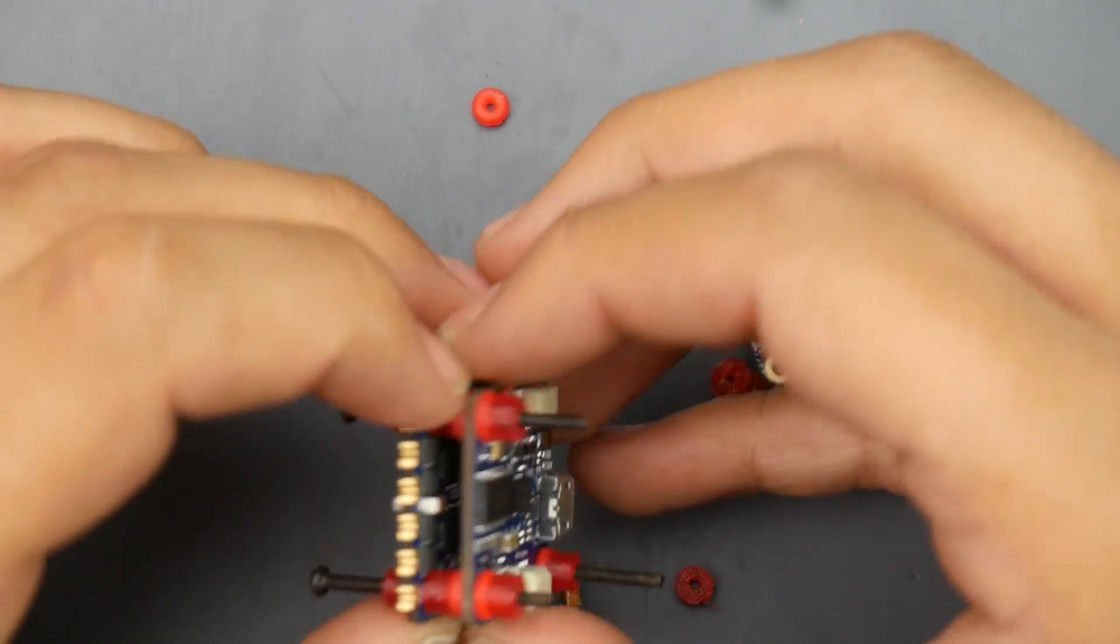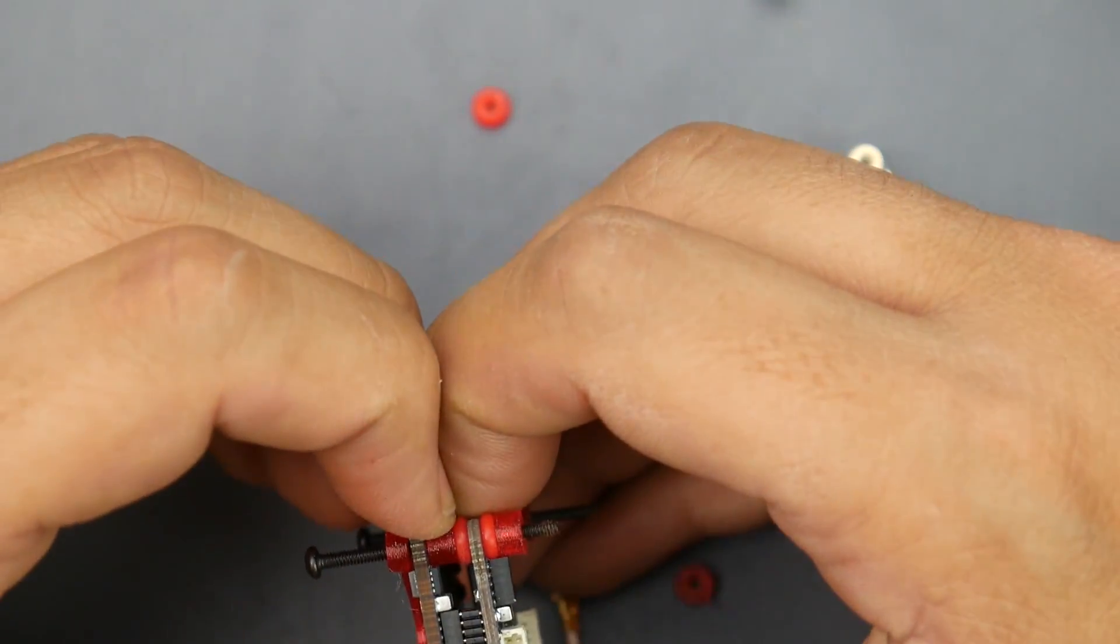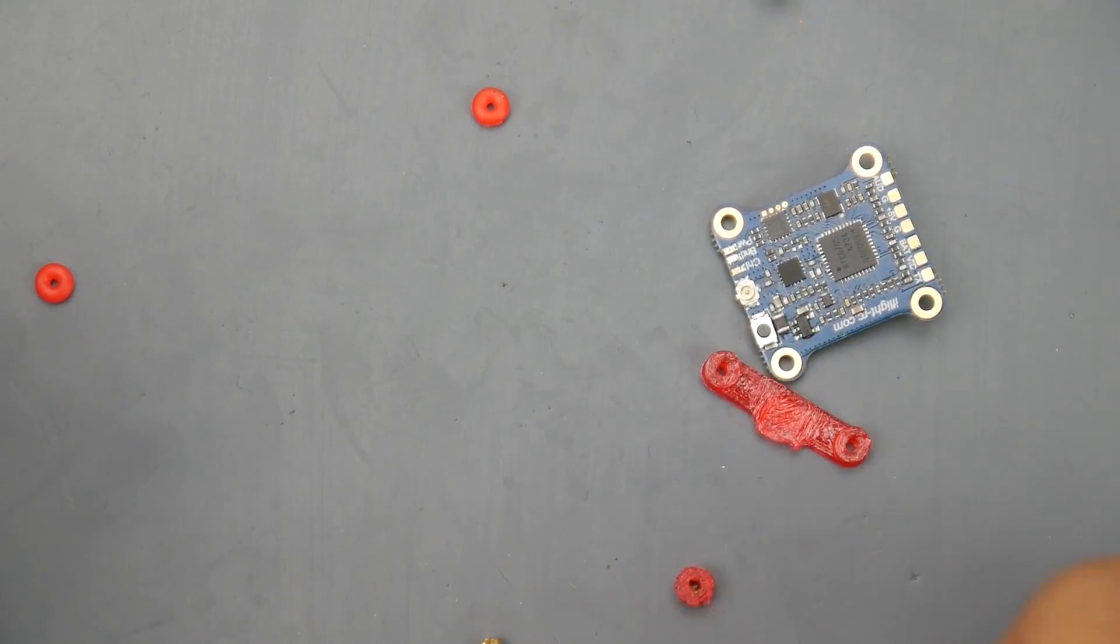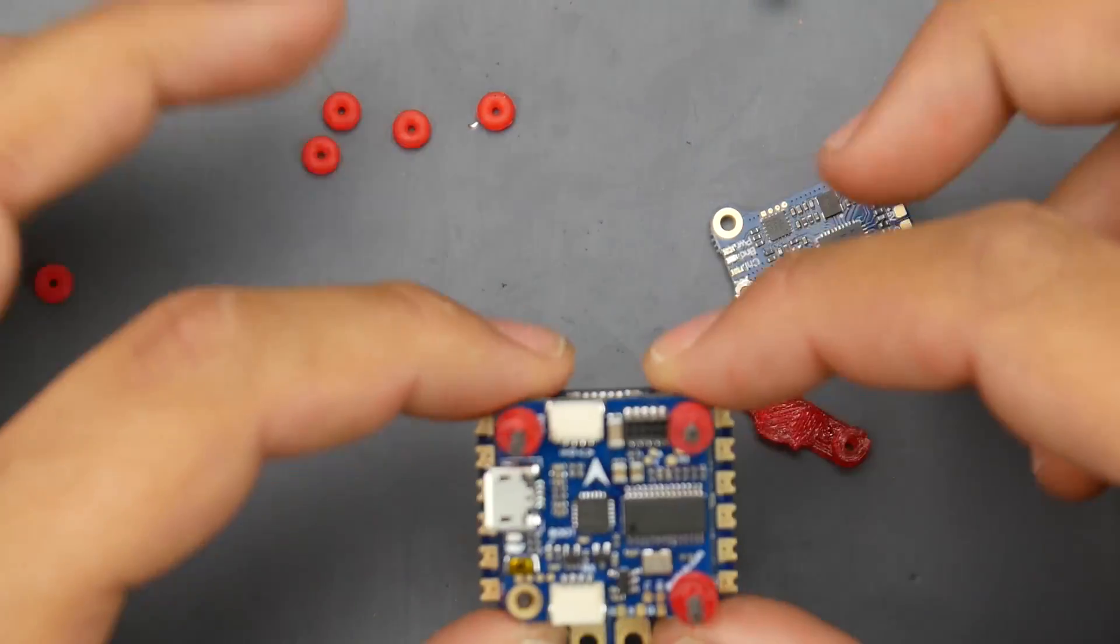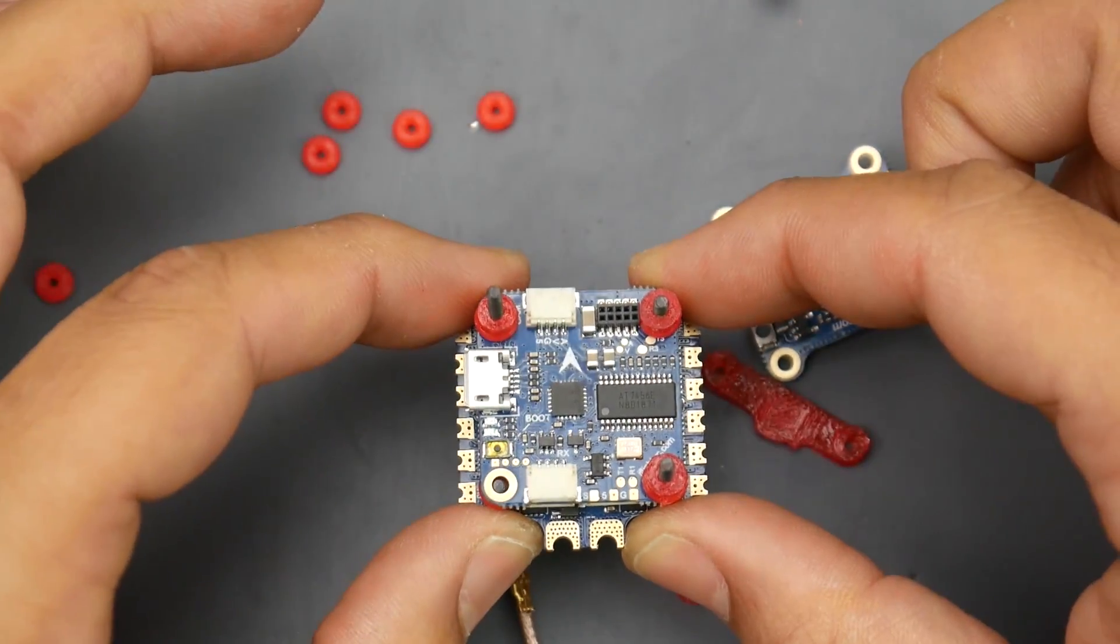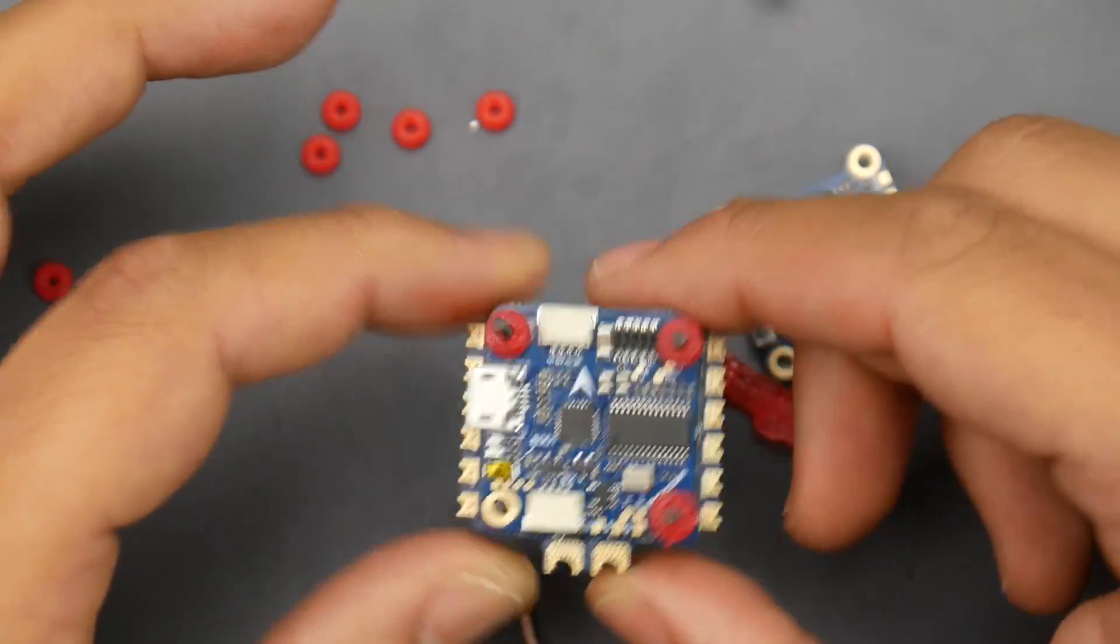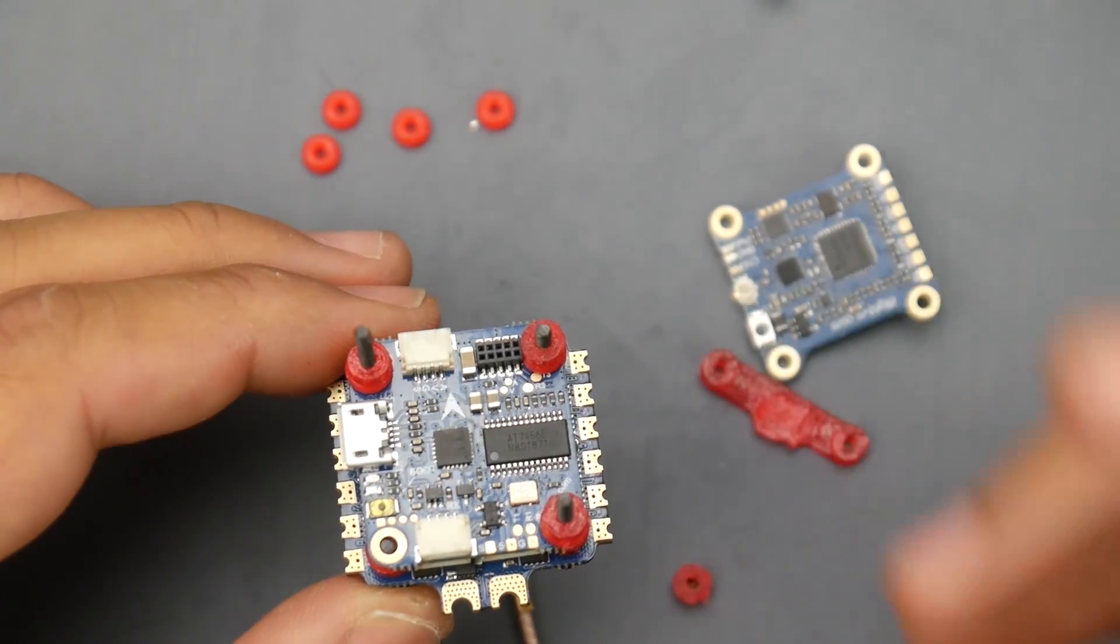Now if we take a closer look at the flight controller here, when you're taking this apart you got to just be a little bit careful because the rubber gaskets just tend to fly everywhere and if you lose them they don't provide you with any spare, so keep that in mind here. Now if we take a look at the flight controller, it is meant to be mounted like this so the batteries would actually come in the back. So this would be motor one, two, three, four.